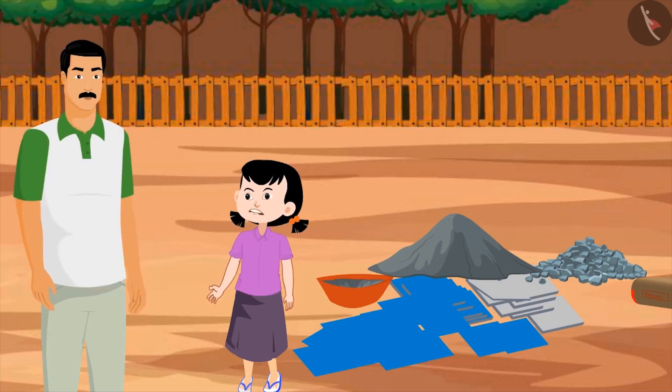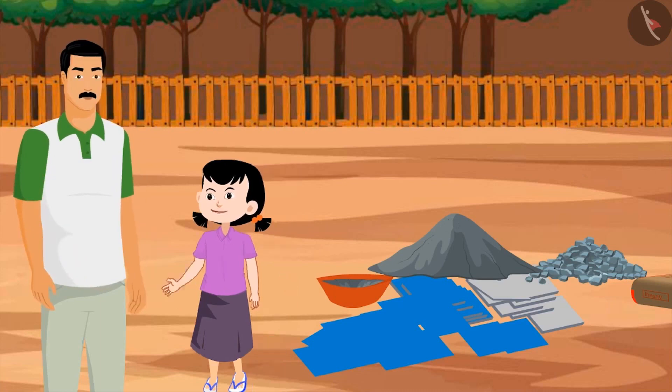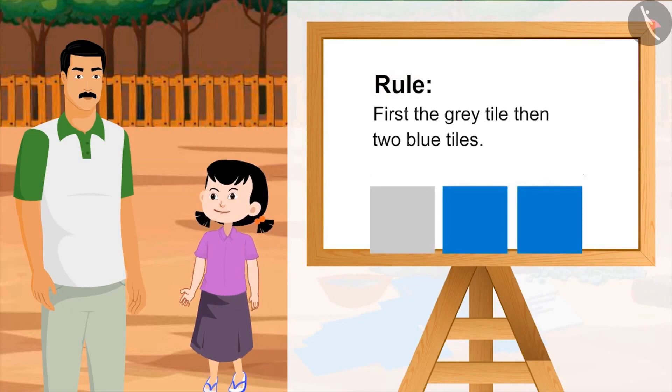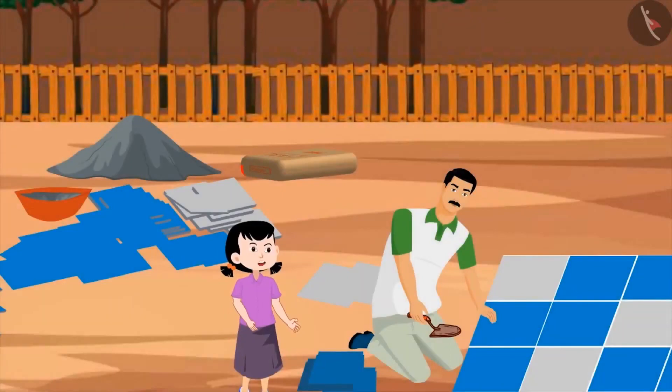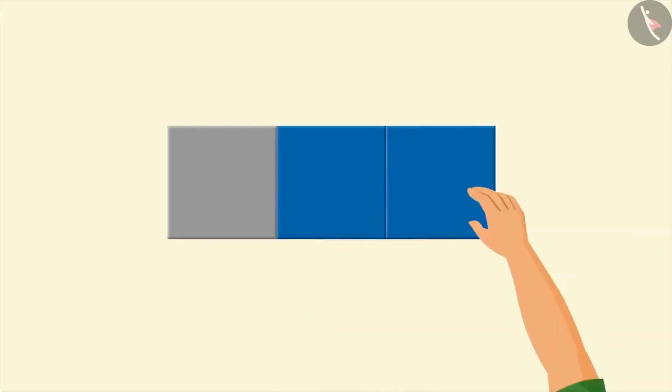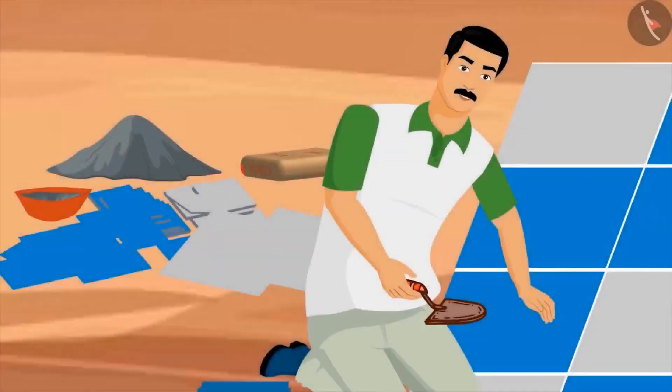You say. We have blue tiles in more numbers. So, we can place one grey tile and then two blue tiles. Wow! You have given a great idea. Come, let's tile the courtyard using this pattern. Can I help you in this? Yes, sure. Like this. Yes, right.